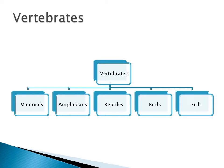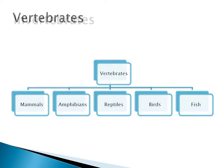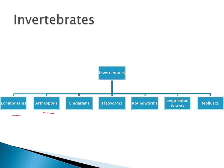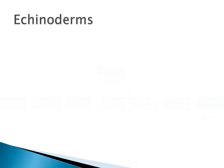You learned a bit about vertebrates in primary school as well. The one we'll look at today is invertebrates — that's slightly more difficult. You can see already that we have more invertebrate categories. We've got echinoderms, arthropods, cnidarians, flatworms, roundworms, segmented worms, and mollusks. So let's look at each of these in turn. The first one we have is the echinoderms.